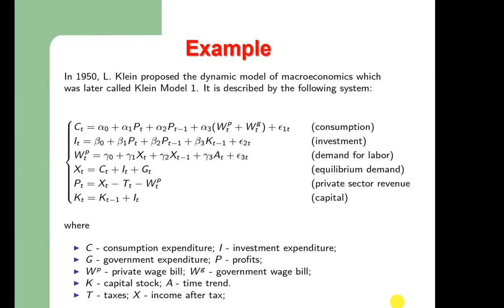An example is the Klein model. Klein (1950) proposed a dynamic macroeconomic model described by a system of equations including: a consumption function, an investment function, a demand for labor, an equilibrium demand, private sector revenue, and a capital function. Variables include: C (consumption expenditure), I (investment), G (government expenditure), P (profits), WP (private wage bill), WG (government wage bill), K (capital stock), A (time trend), T (taxes), and X (disposable income).